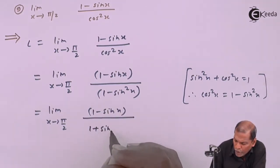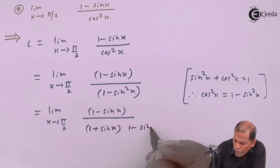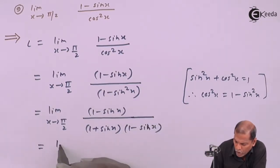I can write (1 + sin x)(1 - sin x). That equals the limit as x tends to π/2.